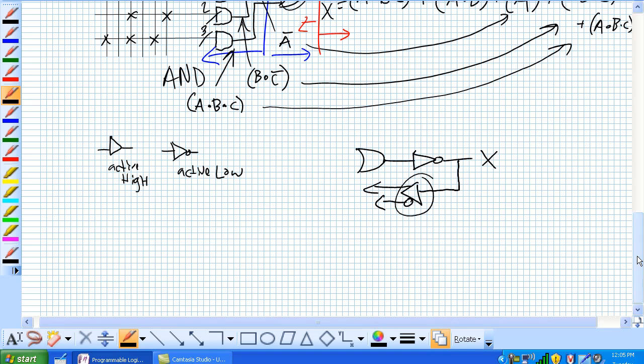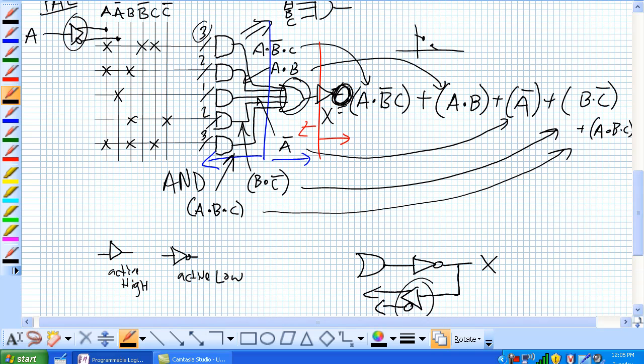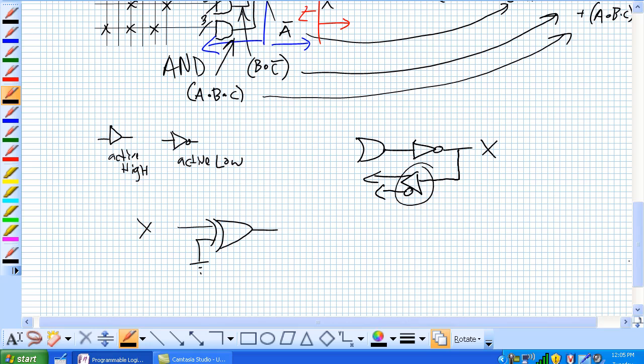Last thing for output logic is your polarity. Remember from lab four and five from the Floyd book, our selective inversion feature for an exclusive OR. Let's say if this is our output right here coming out, you can feed it into an exclusive OR where one leg is grounded to zero.